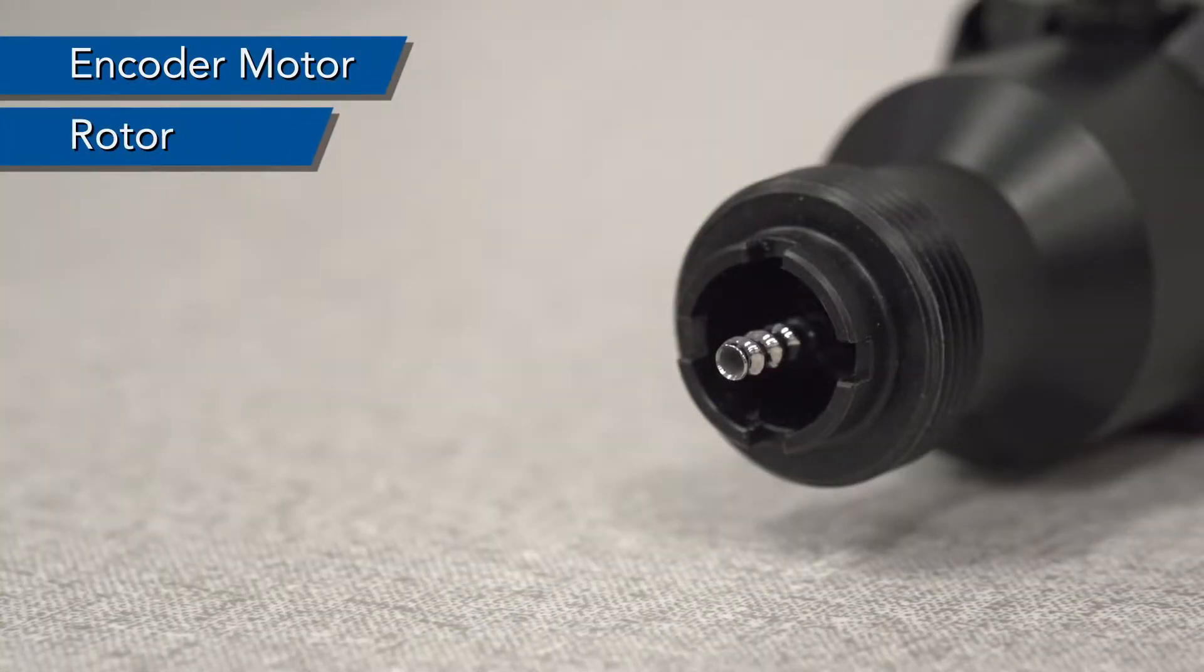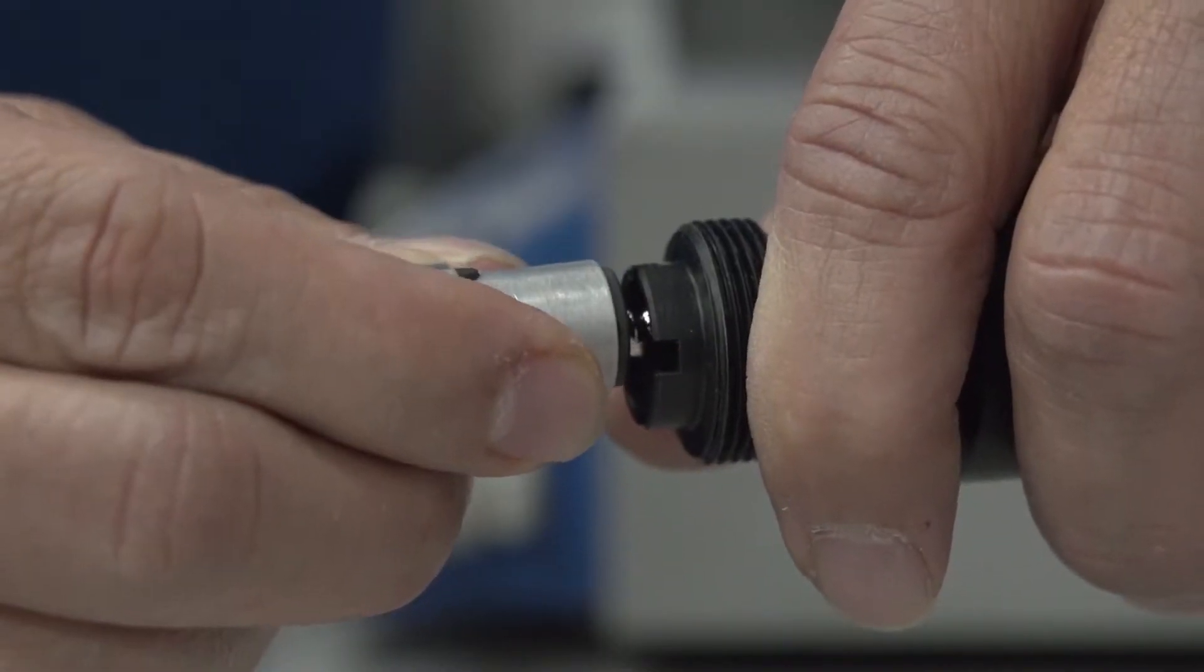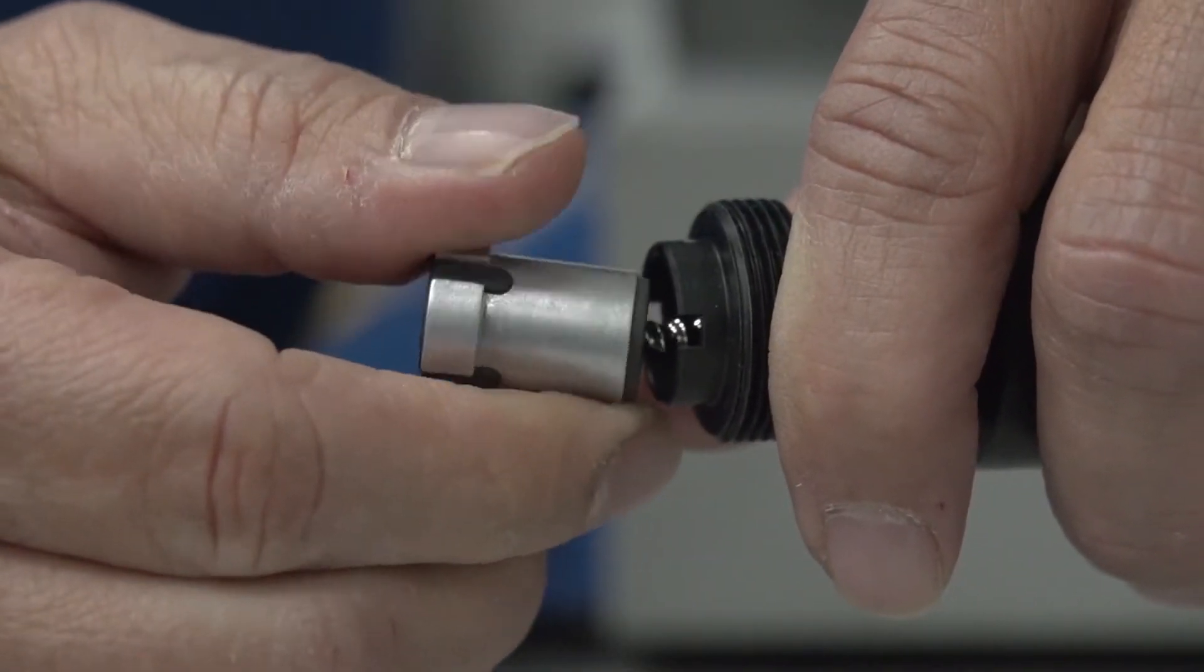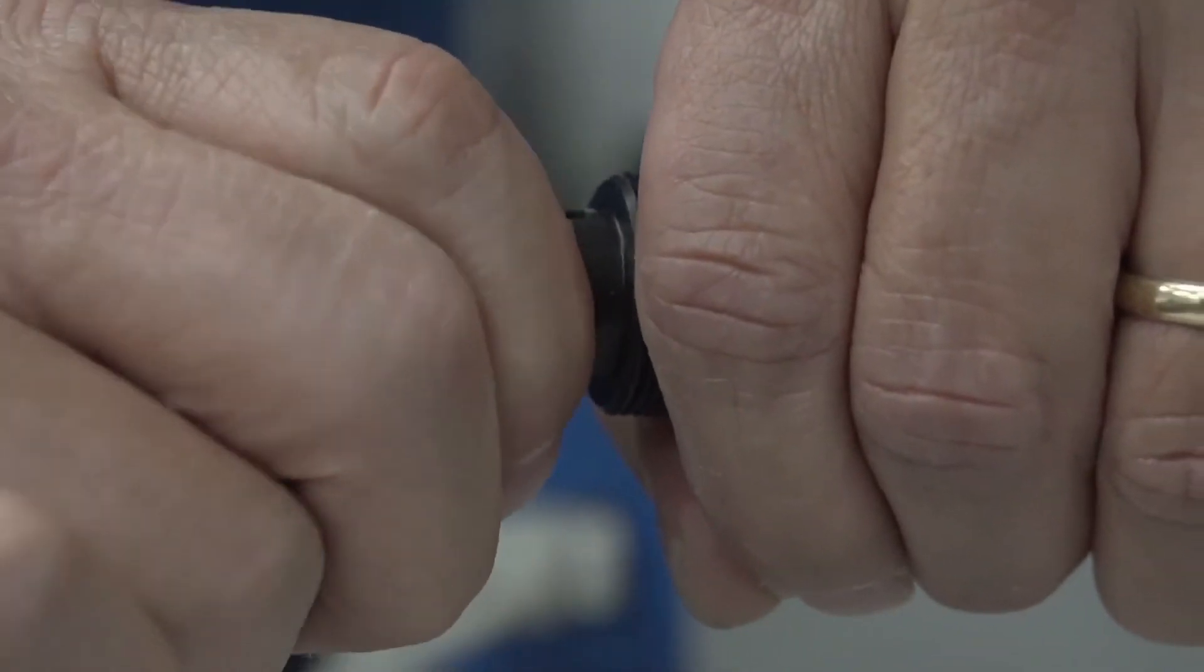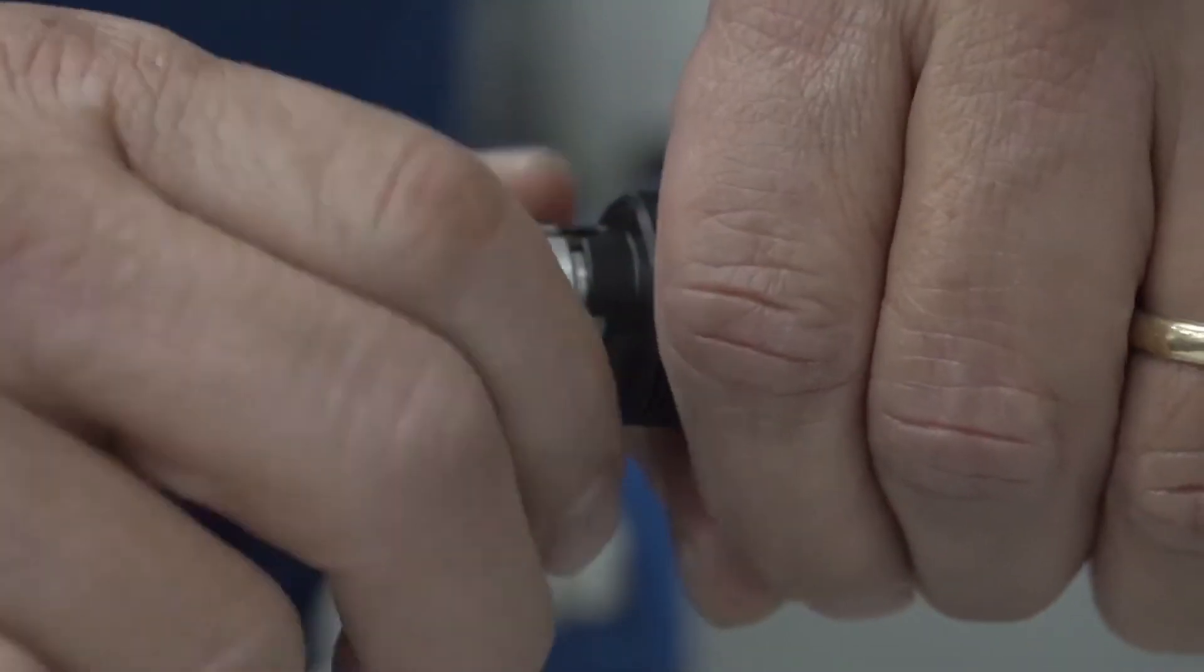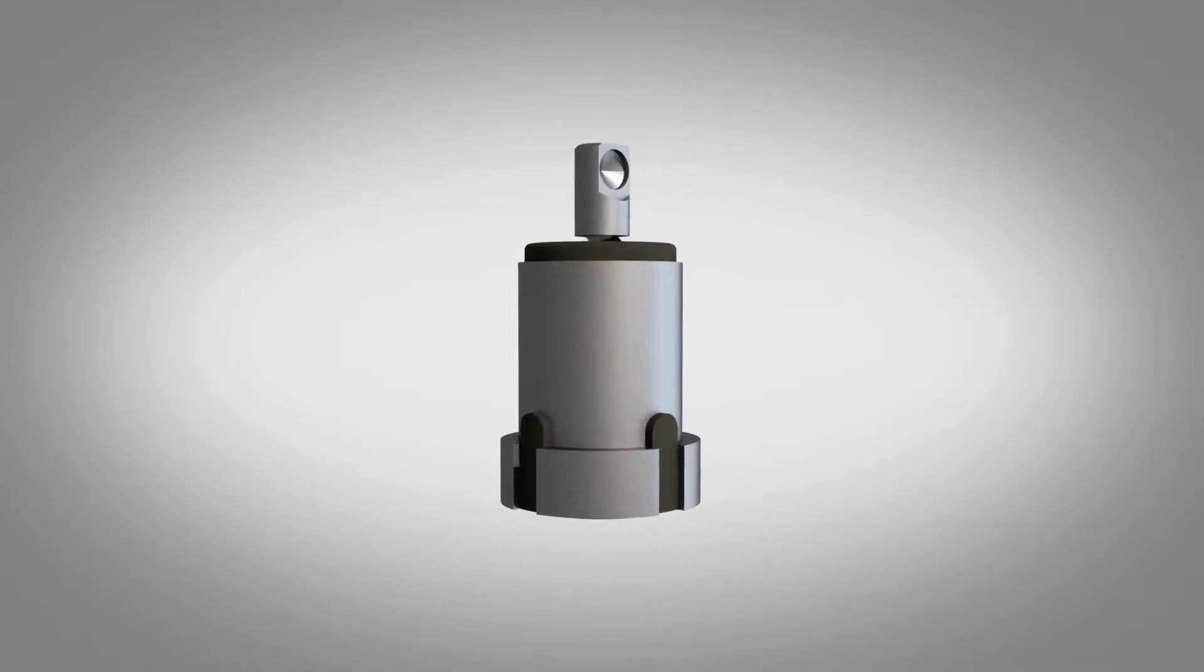The pump consists of three main components: an encoder motor, a rotor, and a stator. The rotor is connected to the motor by a flexible coupling. The stator acts as a fluid chamber and wraps around the rotor to provide a positive seal for each cavity on the rotor.